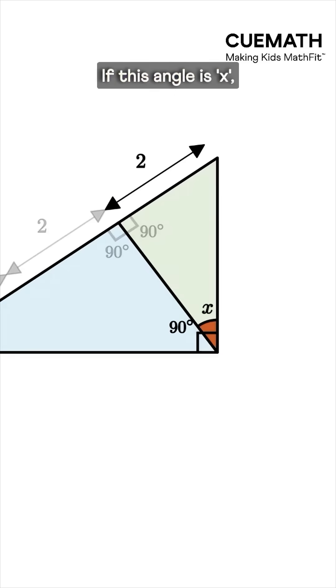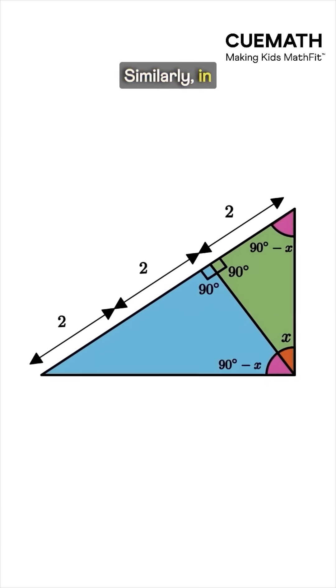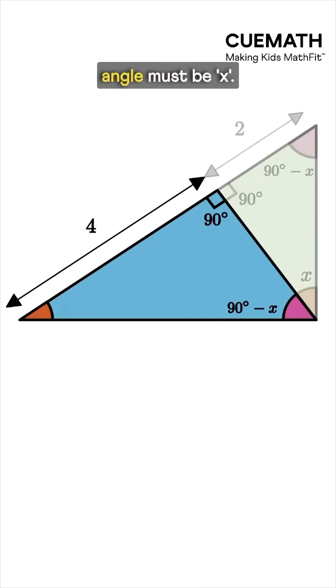If this angle is x, then this one must be 90 minus x. Now in this triangle, by the angle sum property, this angle must be 90 minus x. Similarly, in the second right triangle, this angle must be x.